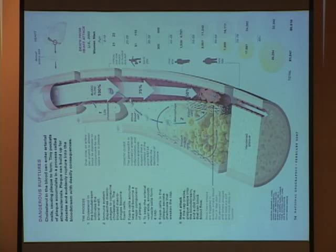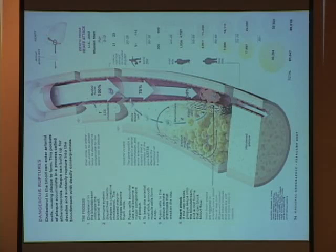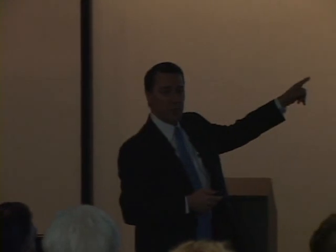Somewhere along the vessel there's a rupture, and the contents of that plaque get into the bloodstream. Think of this as a reverse scab: when you poke yourself and bleed, clotting stops it within minutes and a scab forms. When plaque contents exit into the blood, the same thing happens — tissue factors create clotting, and a thrombus forms. This rupture can happen anywhere plaque exists in the artery — at the 90% blockage or at a mere 10%.